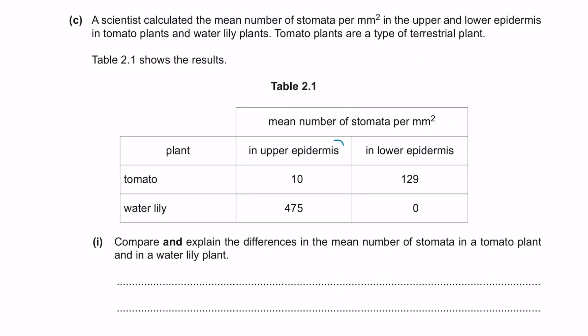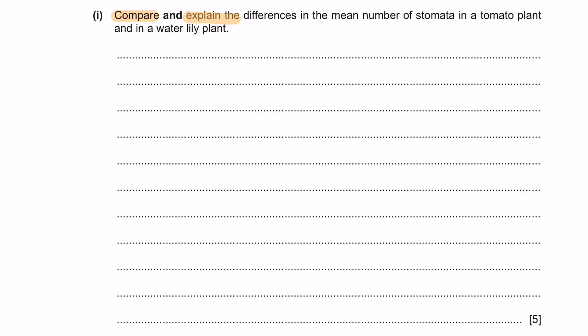Next, Question C. A scientist calculated the mean number of stomata per millimetre square in the upper and lower epidermis. Tomato plants are a type of terrestrial plant. Table 2.1 shows the results. Part 1. Compare and explain the differences in the mean number of stomata in a tomato plant and in a water lily plant. Pay attention here that your command word here is compare, meaning that we are going to require at least two comparisons between tomato and water lily. And your other command word is to explain, meaning that we need to give reasons why there is a difference of number of stomata in the water lily and tomato plant. When you encounter questions that ask you to explain, you can always use the keyword because. You are given five marks here, so we need at least another three reasons for the differences present.